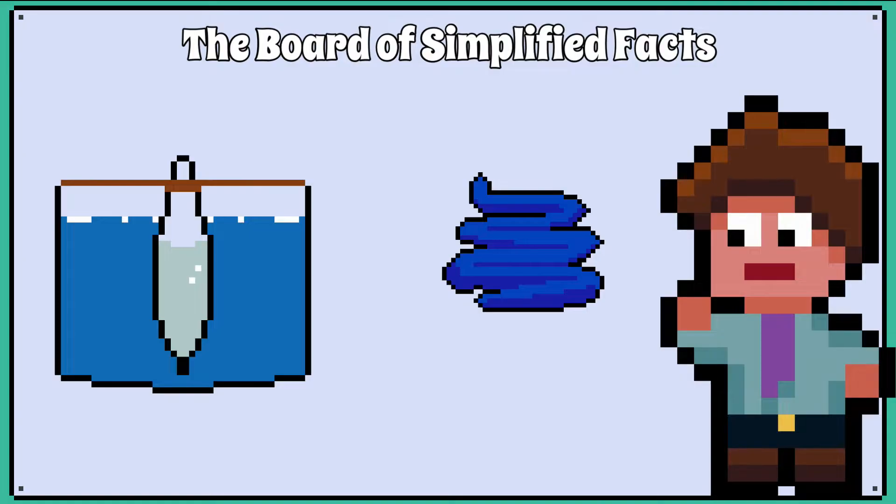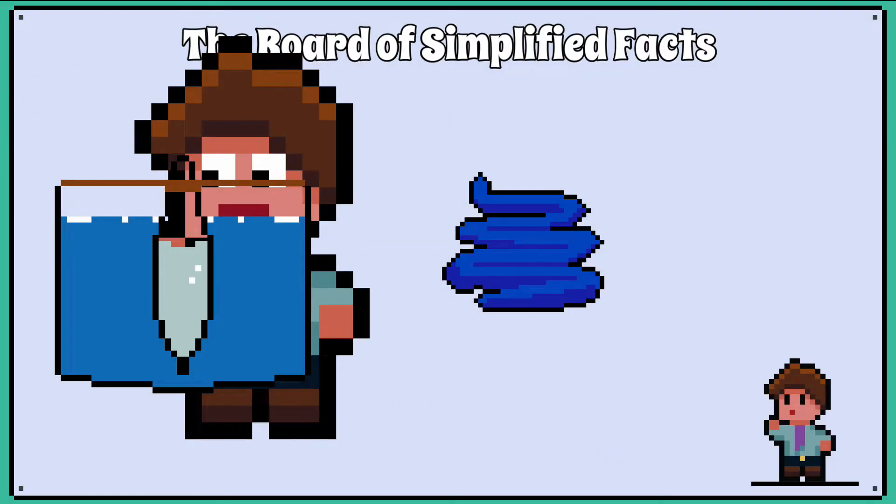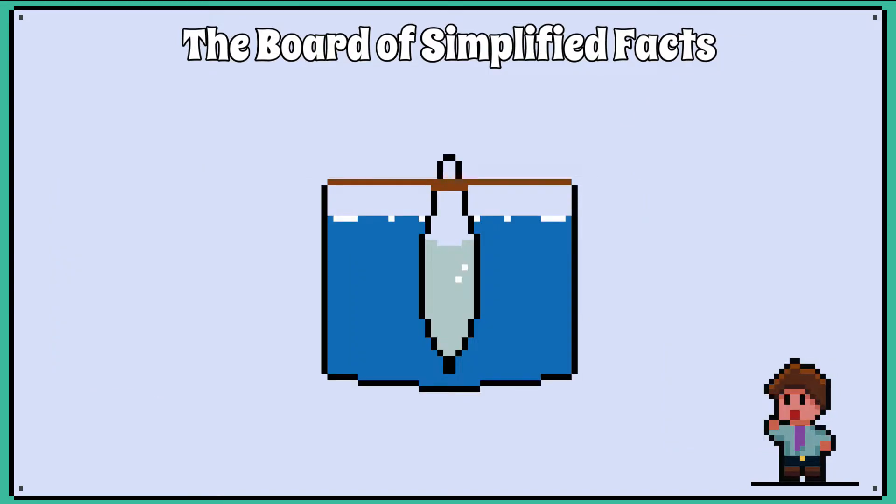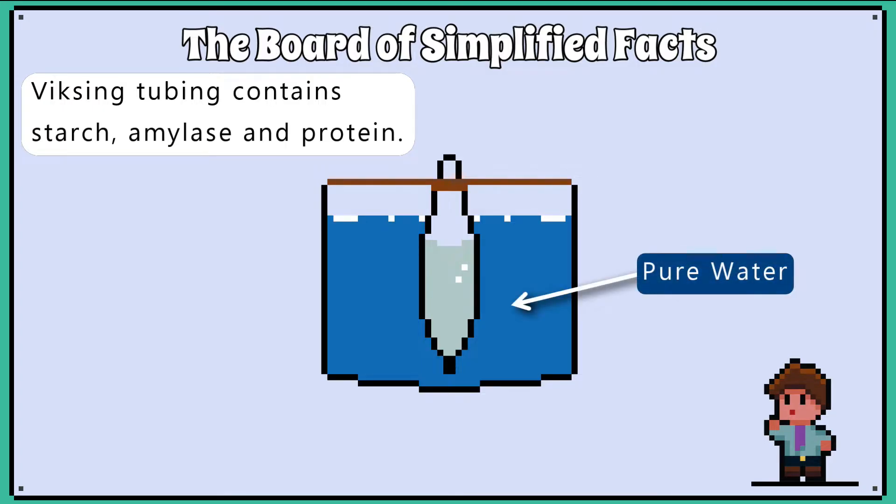Visking tubing can model the small intestine and exam questions can catch pupils out on this topic as there are many different things they could ask you. Let's put inside the visking tubing some starch, some amylase and some protein, and then place that filled visking tubing into a beaker with some pure water.